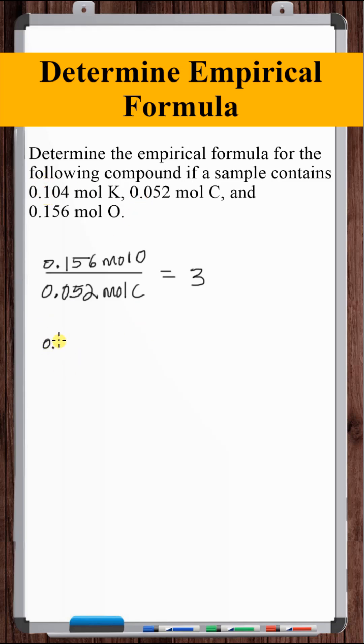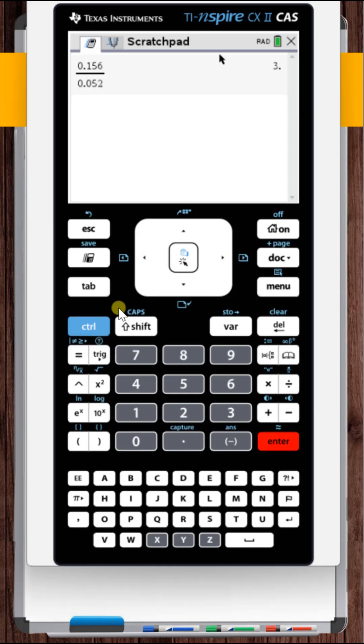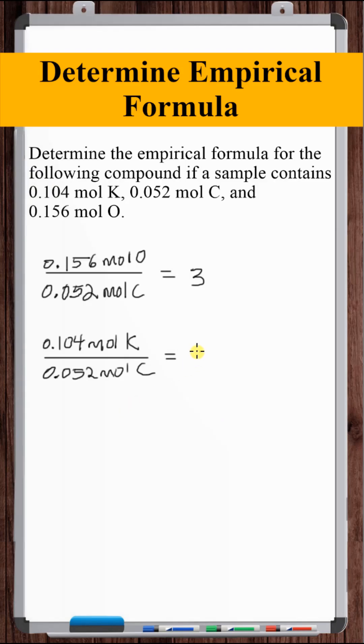Now divide the second biggest by the smallest. 0.104 moles of potassium divided by 0.052 moles of carbon. Two parts potassium to one part carbon.